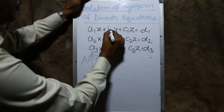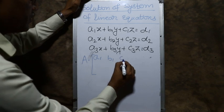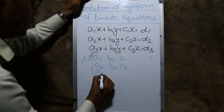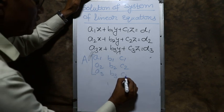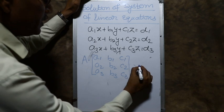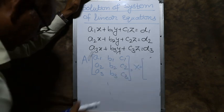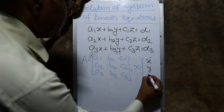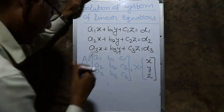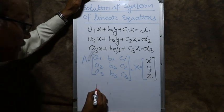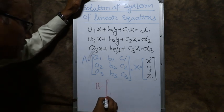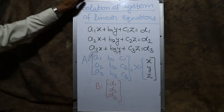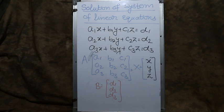Matrix A is the matrix of coefficients: [a₁, b₁, c₁; a₂, b₂, c₂; a₃, b₃, c₃]. Matrix X is [x; y; z]. Matrix B is [d₁; d₂; d₃]. So that gives us AX = B.